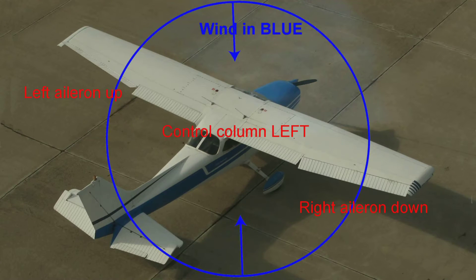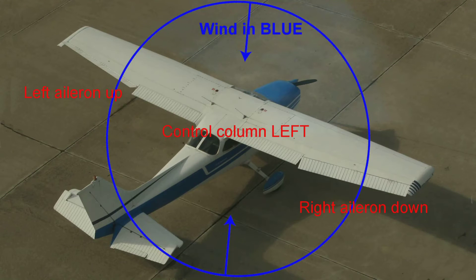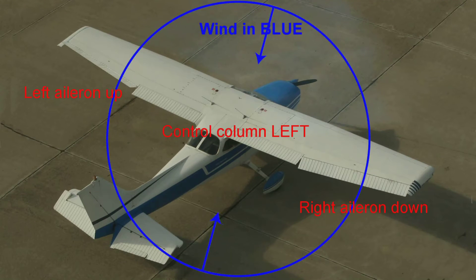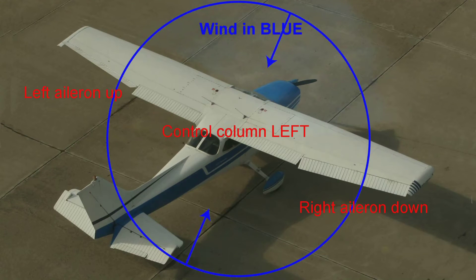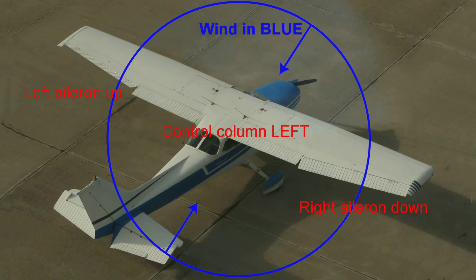The blue wind vectors here show that when the wind is from in front of you to your left, you need the left aileron up and the right aileron down. Notice the symmetry — that's exactly the same with the wind behind you from the right.